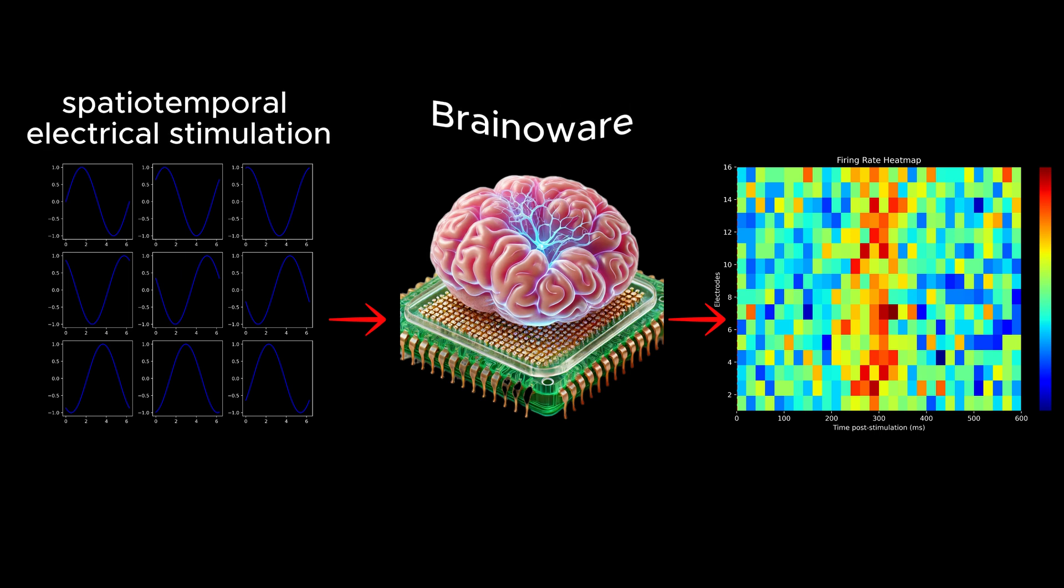Now, what does spatiotemporal electrical stimulation mean? It means delivering electrical signals to the brain organoid in a way that varies across different locations, spatial, and changes over time, temporal. In summary, this image highlights how the organoid functions as an adaptive reservoir, reshaping its neural connections in response to stimuli through a process known as neuroplasticity. This adaptation allows the system to perform unsupervised learning, as we see later in the video.